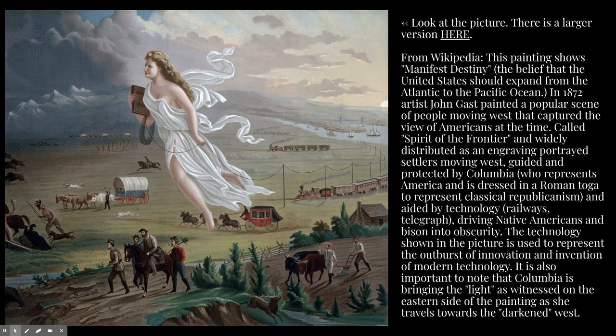Let's read what it says here. It says look at the picture — there's a larger version here, and if I click on the word 'here' it's going to take me to the Wikipedia version of this picture, which is the same picture just a little bit bigger. It says: from Wikipedia, this painting shows manifest destiny — the belief that the United States would expand from the Atlantic to the Pacific Ocean.